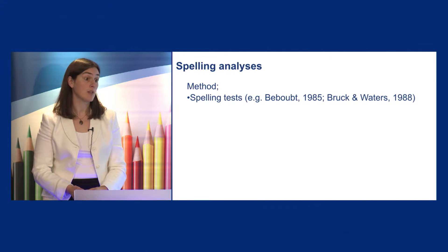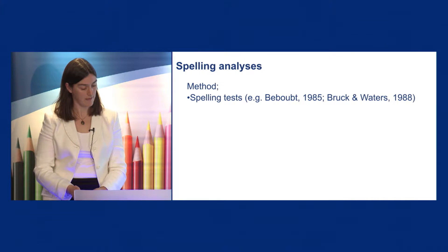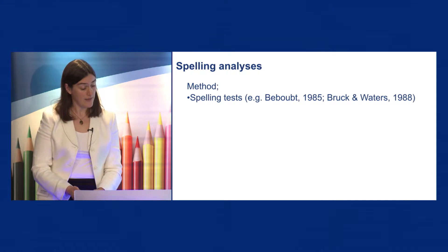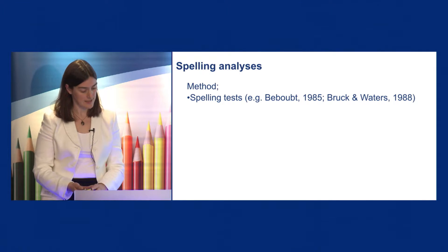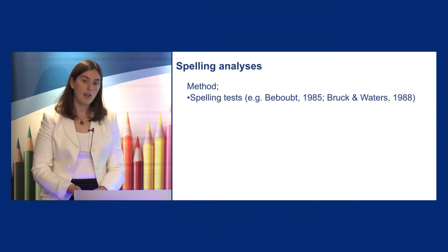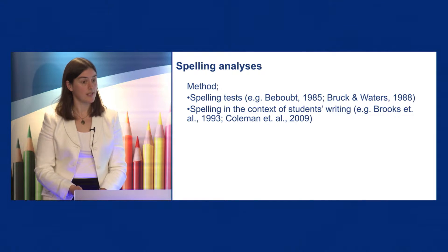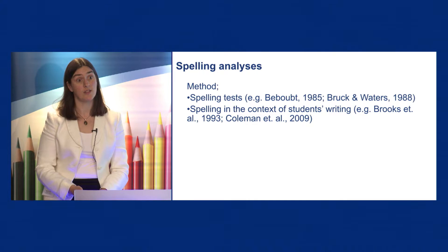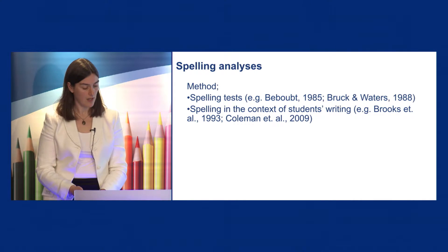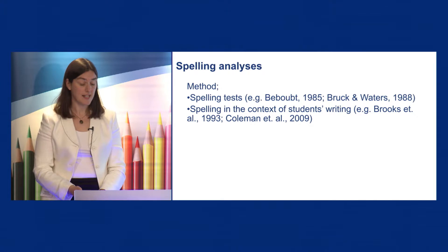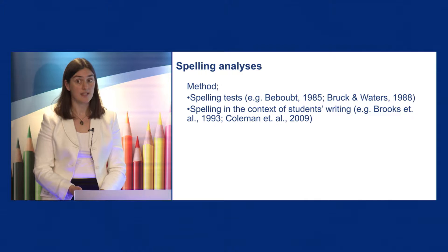Brooks et al. used an archive language monitoring task to look at spelling errors, whilst Coleman et al. in their study asked students to complete a 30-minute essay writing task from which they gathered the spelling errors. These types of studies have allowed researchers to investigate the frequency of students' errors in their work and to estimate the degree to which their errors have inhibited meaning. Whilst these studies provide an insight into errors that occur in natural writing, they cannot be used to state with certainty which words students can and cannot spell correctly.